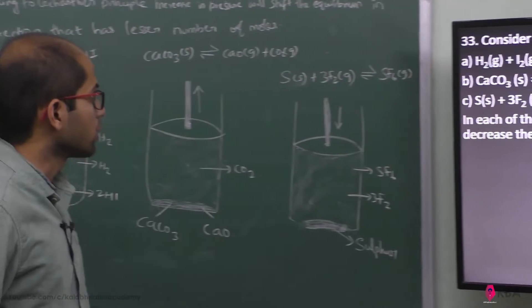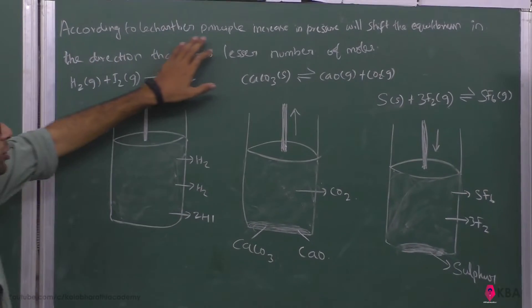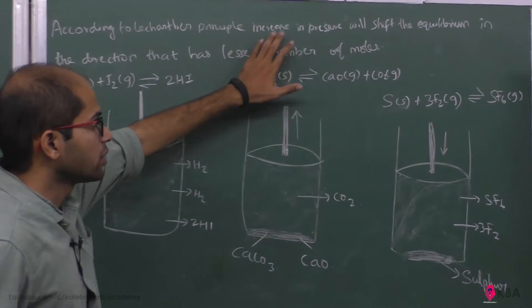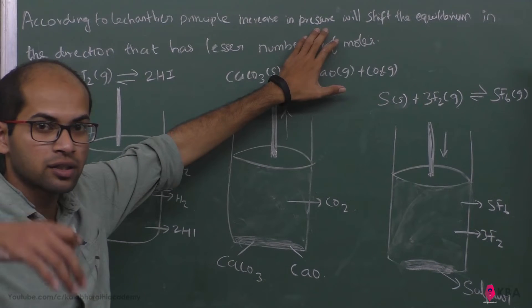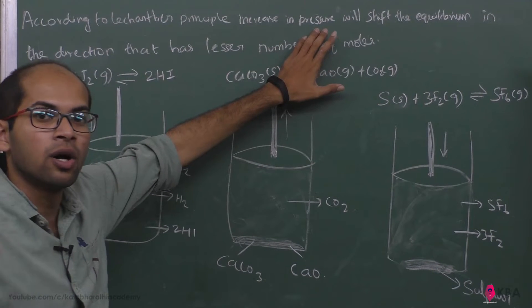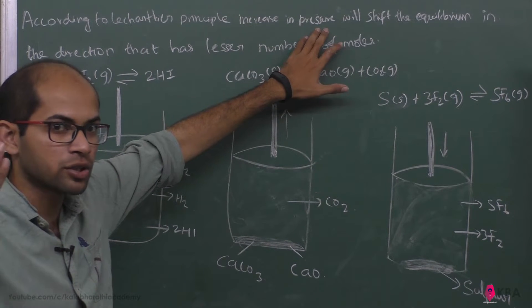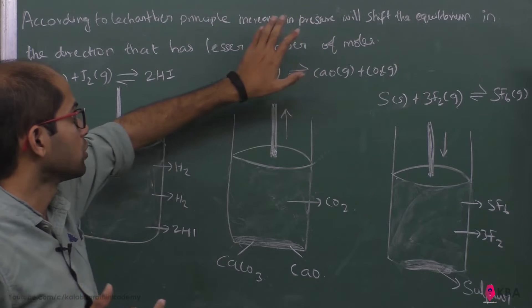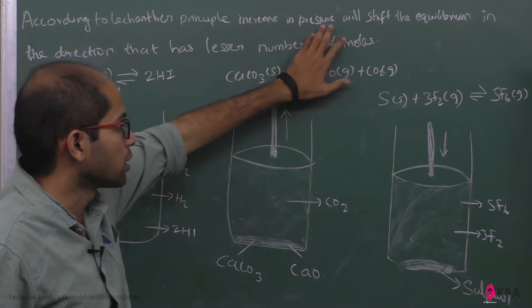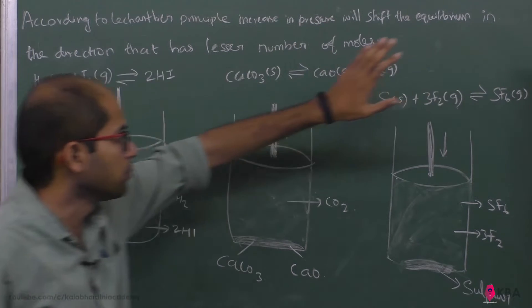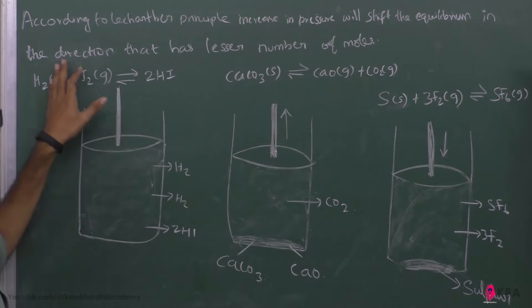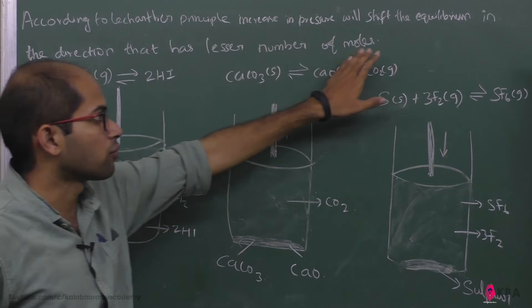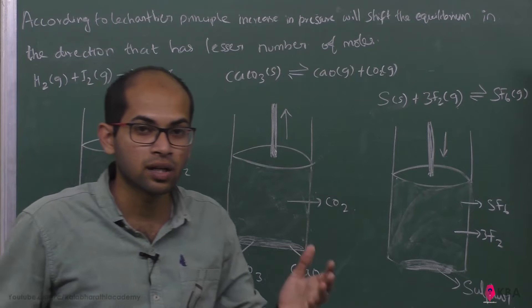According to Le Chatelier's principle, an increase in pressure means a decrease in volume — pressure and volume are inversely proportional. So, an increase in pressure will shift the equilibrium in the direction that has a lesser number of moles.